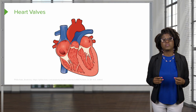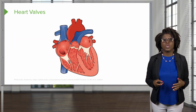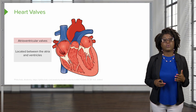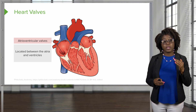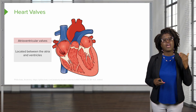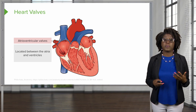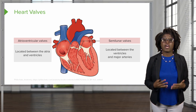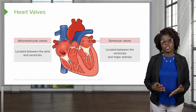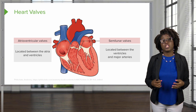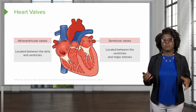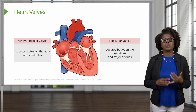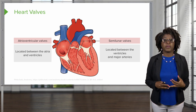There are two major valves found in the heart. We have the atrioventricular valves, which are going to be located between the atria, which are receiving chambers, and the ventricles, which are our pumping chambers. The other type of valve is the semilunar valves, located between the ventricles and the major arteries, including the aorta and the pulmonary trunk.